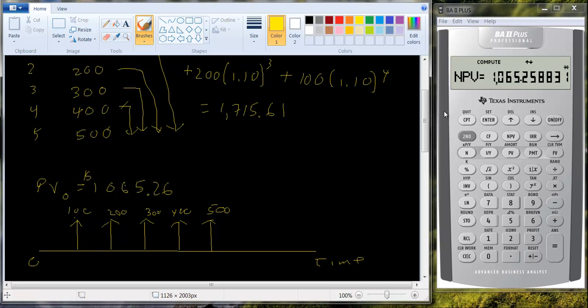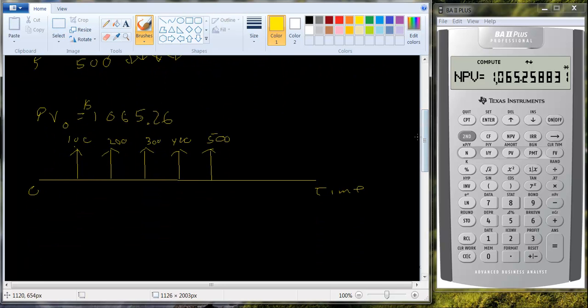That's what this number is. So we know what the present value is, but we don't want the present value. We don't want to know that it's 1,065.26. We want to know what it is in year five. So how can we do that? Well, now we know the present value. We can find the future value in year five by taking this 1065.26 and multiplying it by 1.10 to the fifth power.